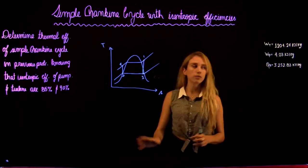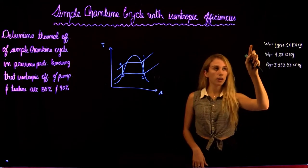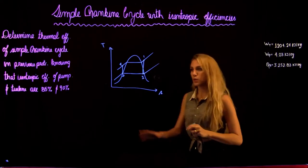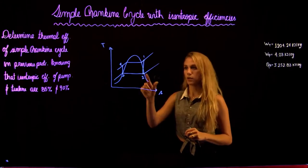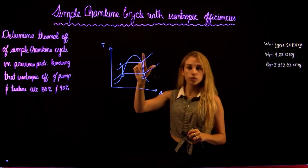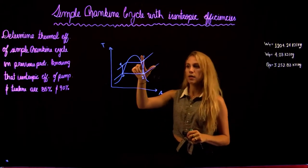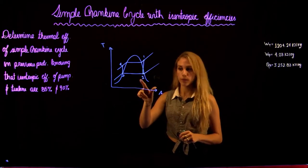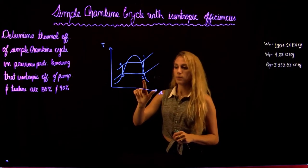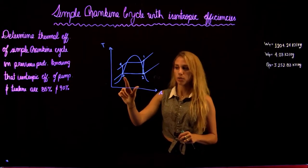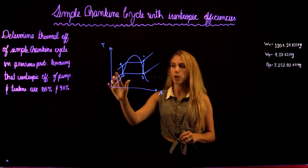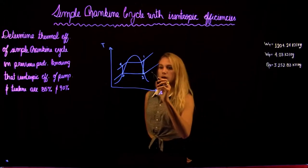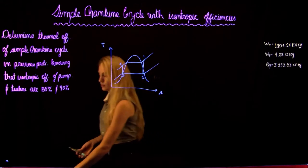In the previous problem, we found the work of the turbine, pump, and the heat input in the boiler. We also have a TS diagram that looks something like this. We have state 1, which is before the turbine. The fluid expands to state 2, then it goes through the boiler to state 3, then it gets pumped to state 4, and then it goes back to the boiler. This is assuming perfect isentropic work.